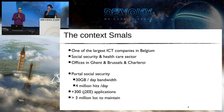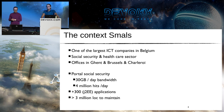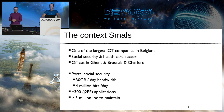A little context: Smalls is one of the biggest ICT companies in Belgium, active in the social security and healthcare sectors, with offices in Ghent and Brussels. We host the portal of the social security in Belgium, which on an average day has 30 gigs of bandwidth and 4 million hits a day. Next to that, we have around 300 J2EE applications to develop and maintain.